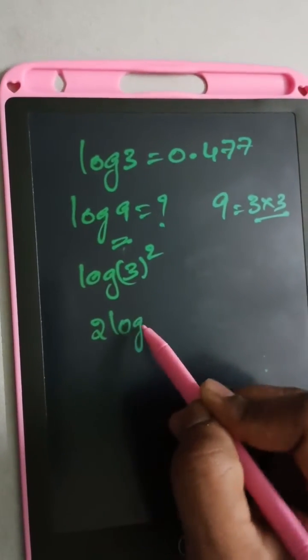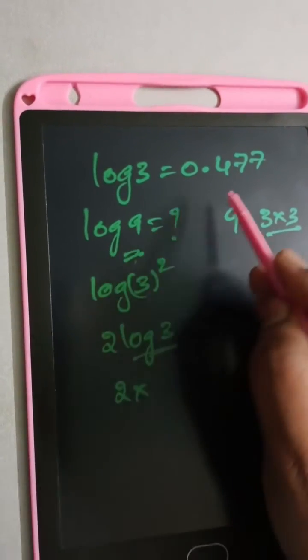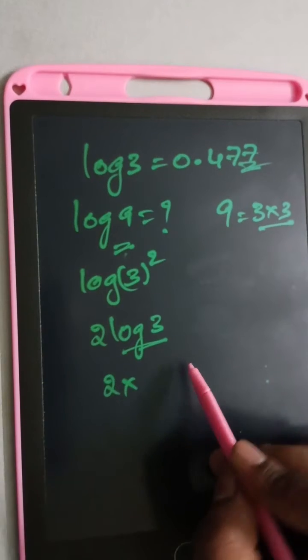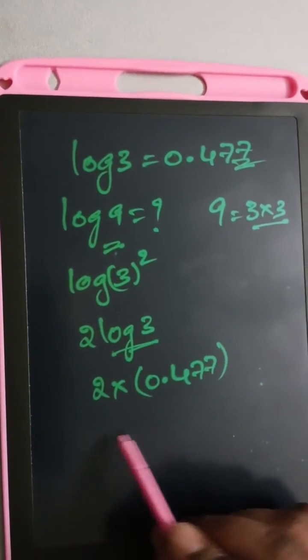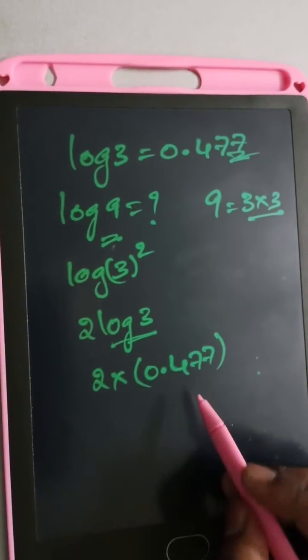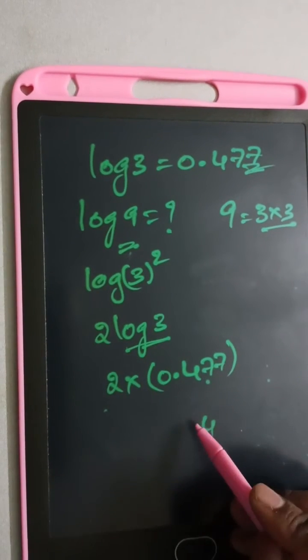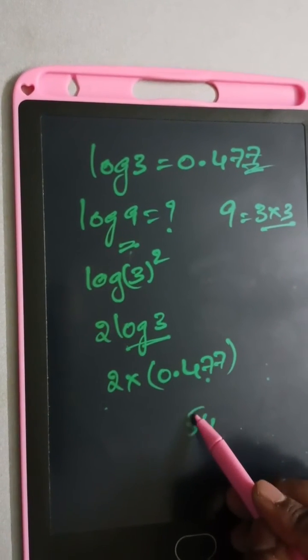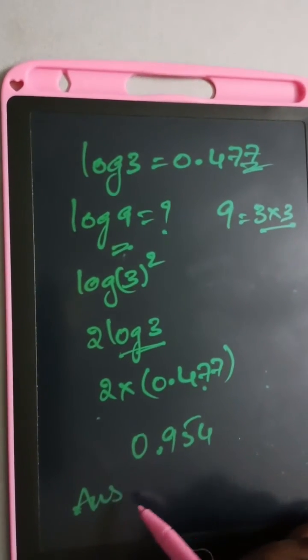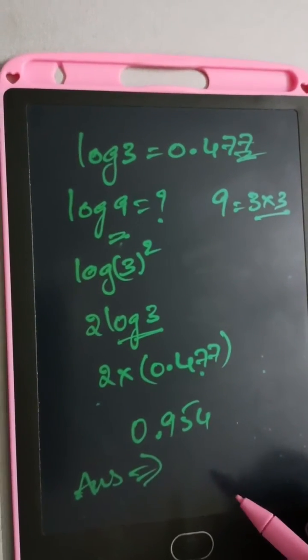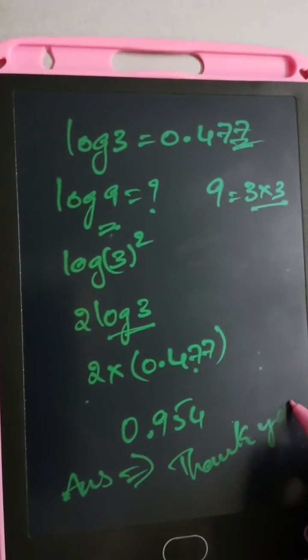This is equal to 2 log 3. Using the log 3 value of 0.477, we get 2 times 0.477 equals 0.954. Thank you for watching friends, please like.